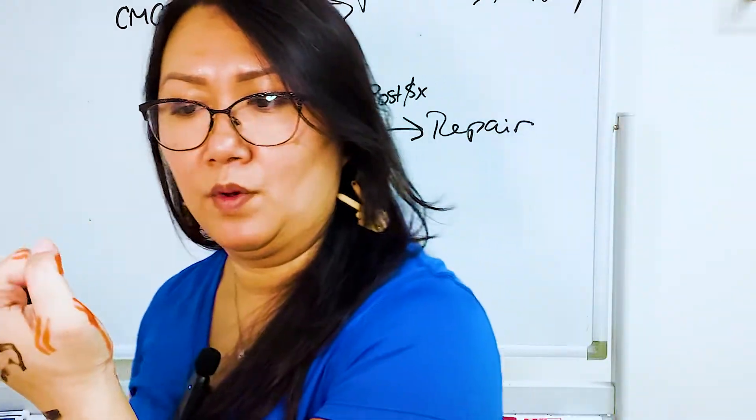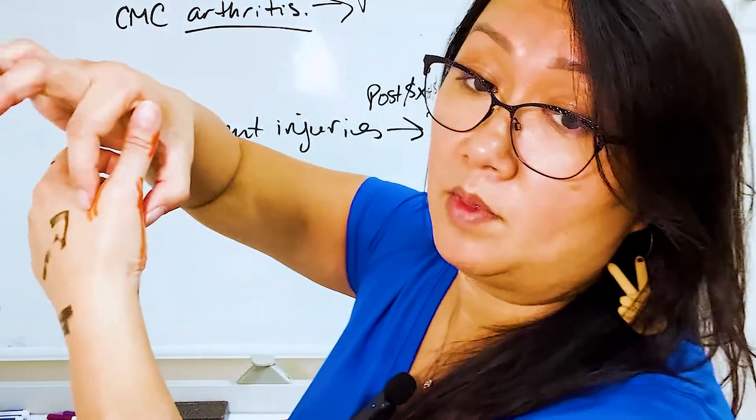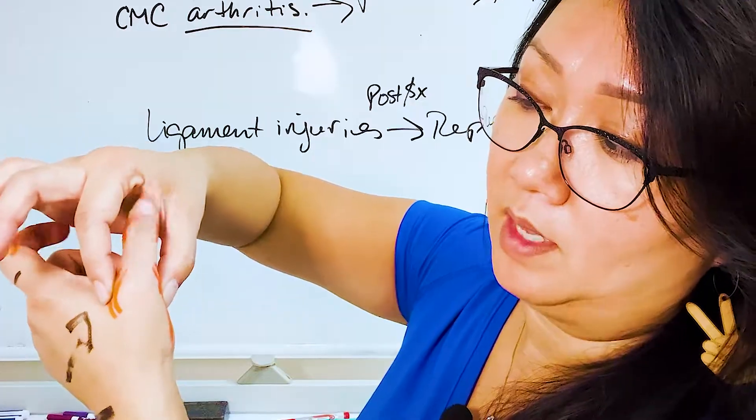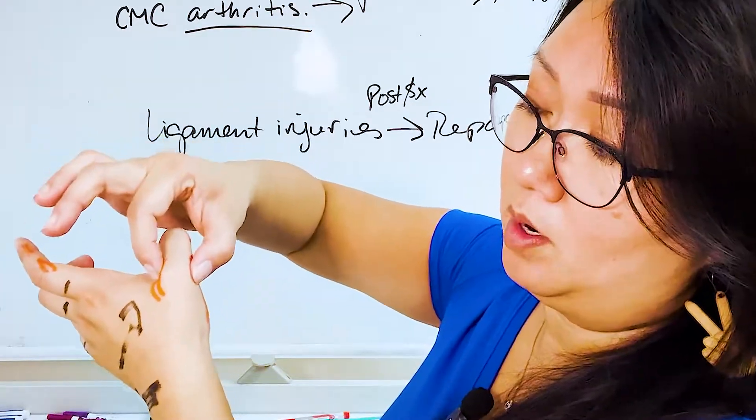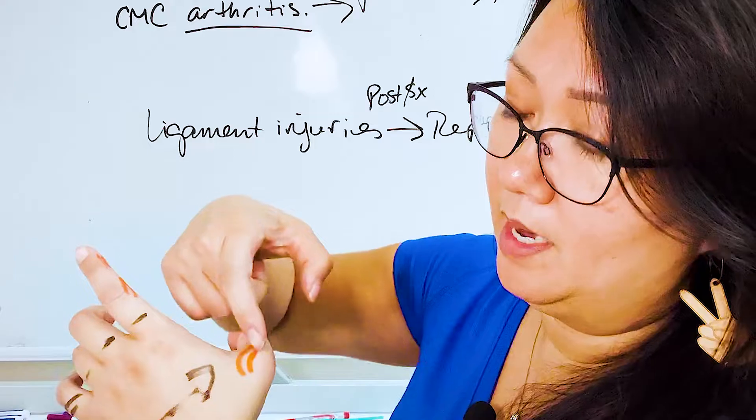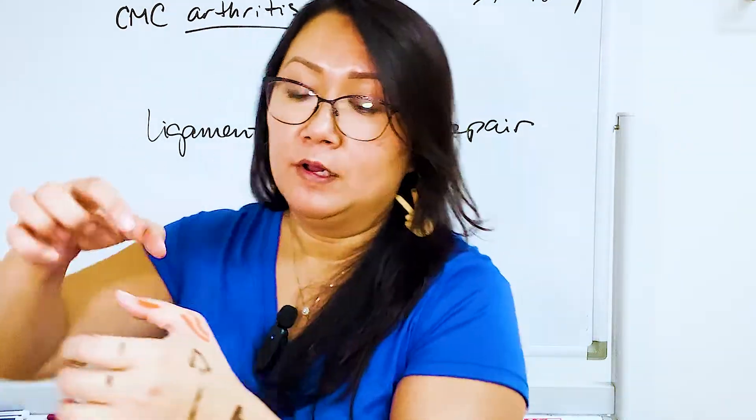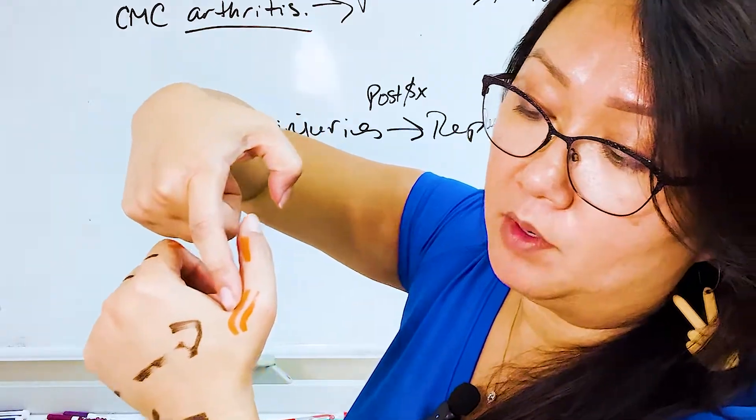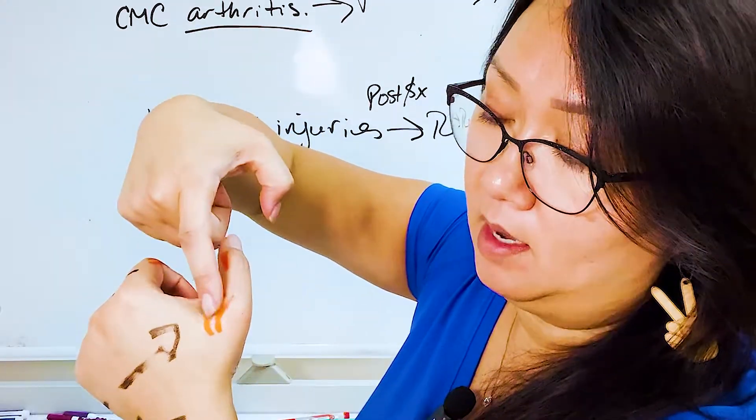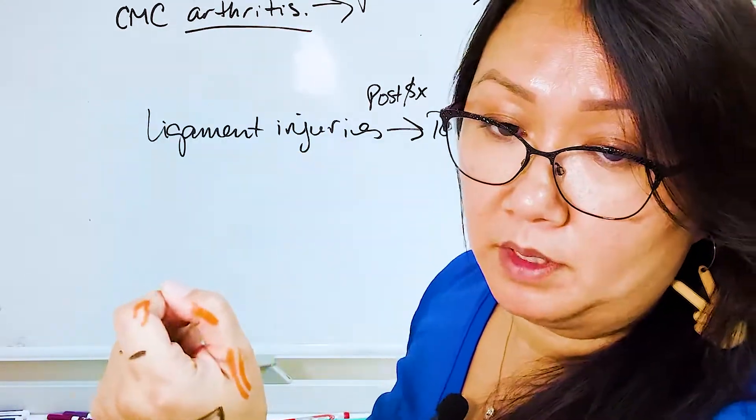But most of the time, that's not the one that gets injured. Most of the time, this one, the MP is the one that gets injured, because this one is a little bit different. It has extra ligaments that kind of hold it together. And majority of the time, it's going to be your ulnar side, your inside thumb that gets a lot of stress put into it.